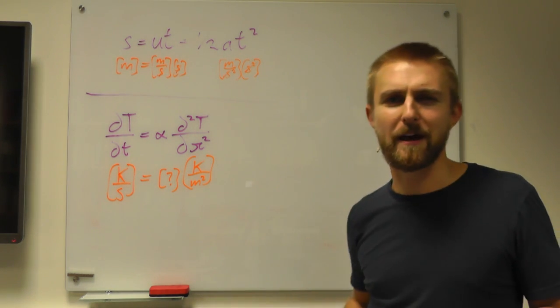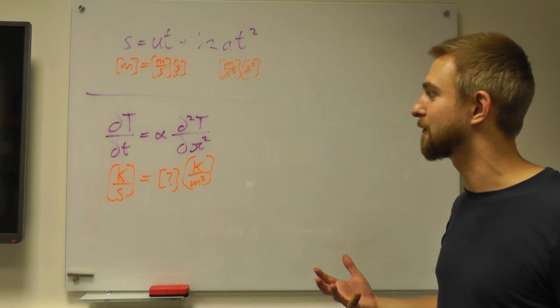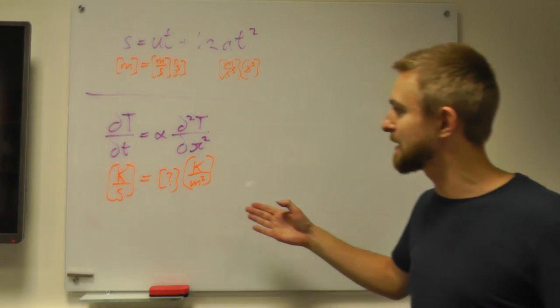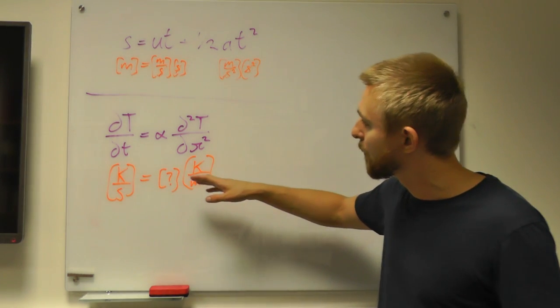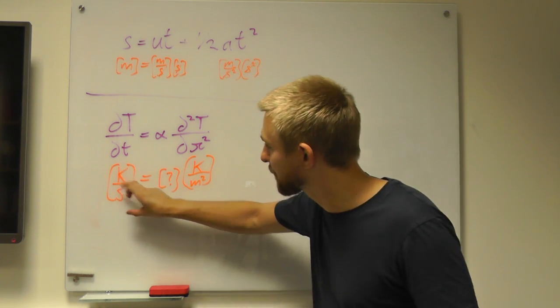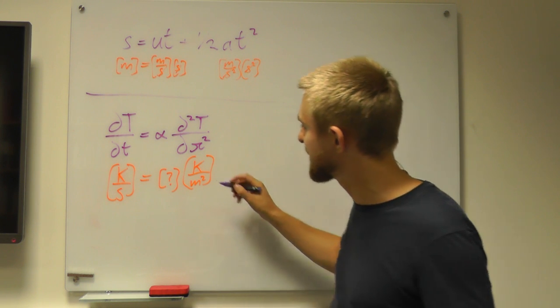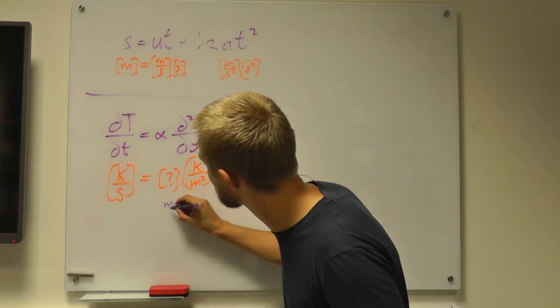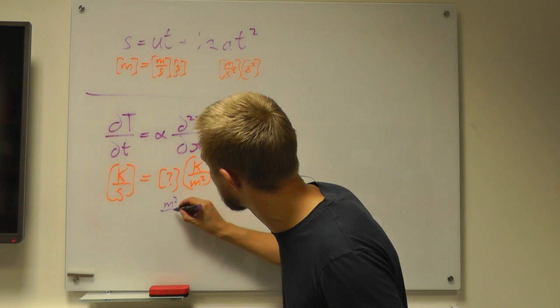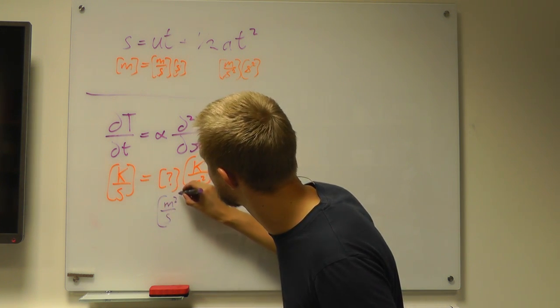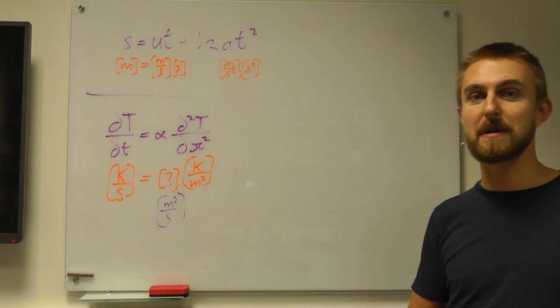So what therefore must the units of alpha be in order for this equation to make sense? Well, we want to have this thing resemble this once it's multiplied by this. So therefore alpha must be meters squared per second in order for that equation to be correct.